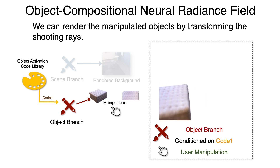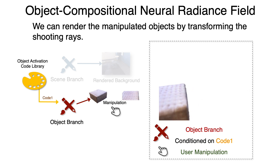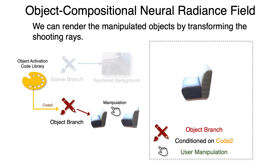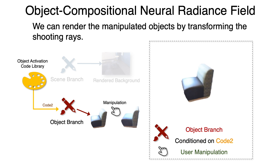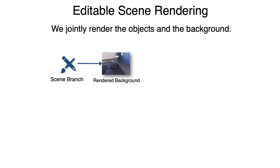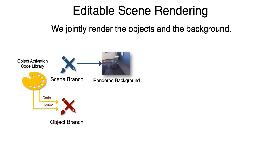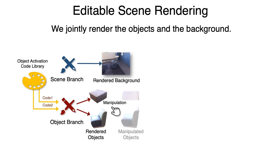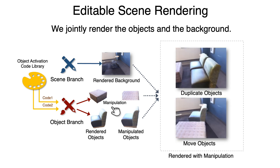Here is an example where the sofa has been moved back and forth, and another example where the sofa is rotating in place. To obtain a complete view with object manipulation, we jointly render the transformed objects from the conditioned object branch and the surrounding background from the scene branch.